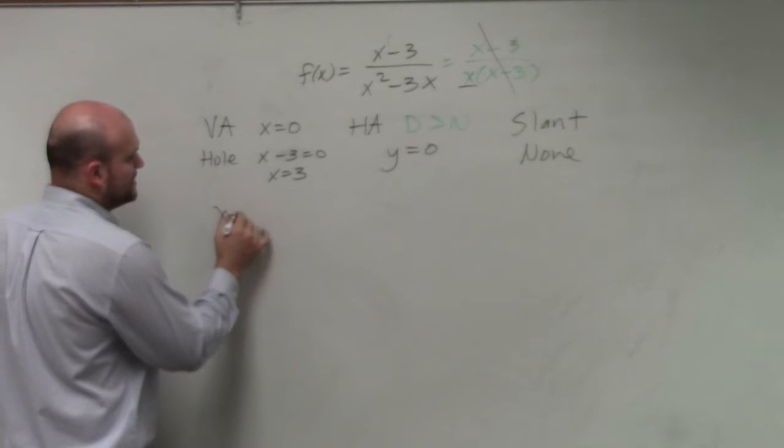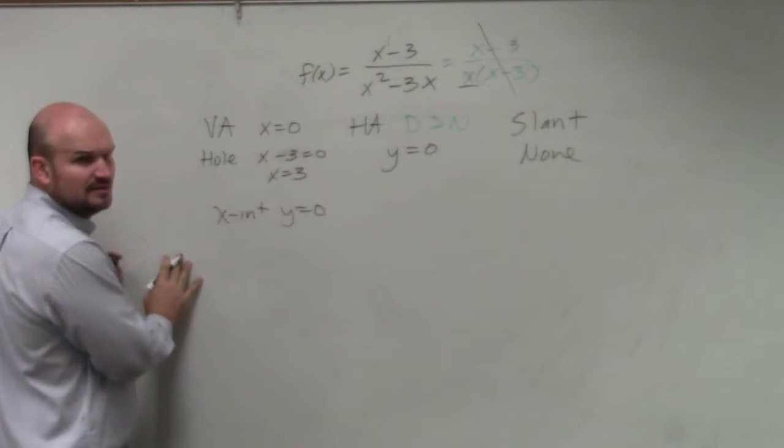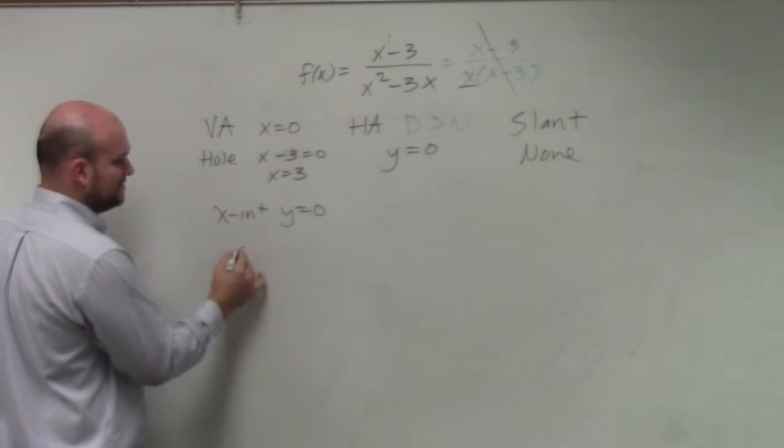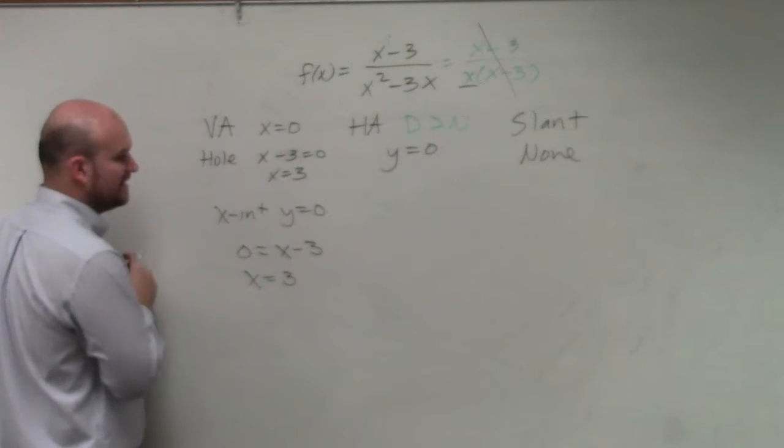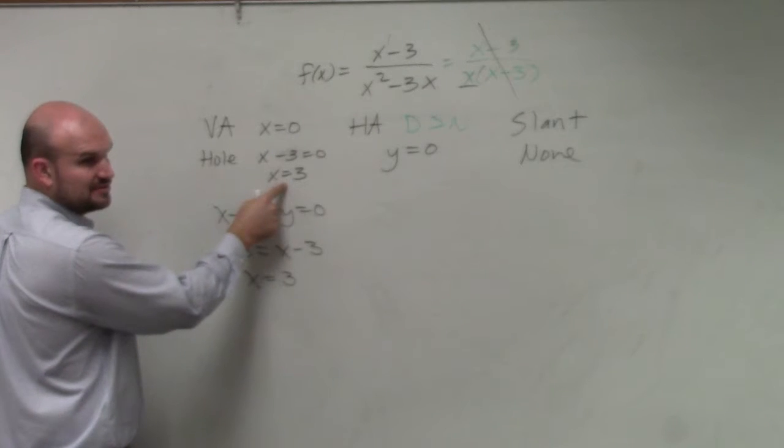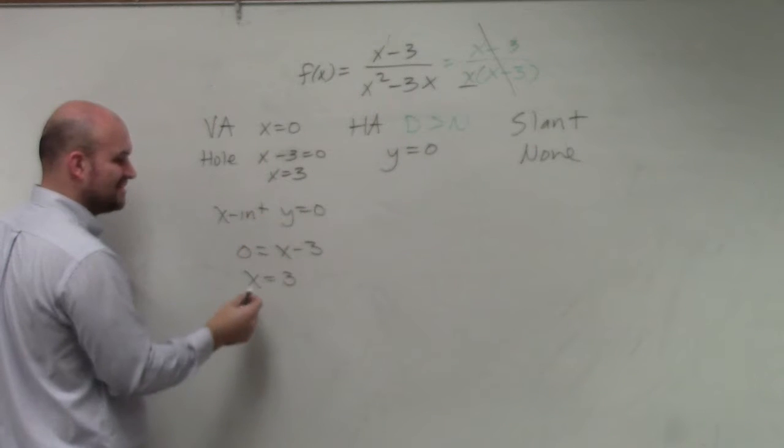X-intercept, y equals 0. Do you guys remember my little trick that I said? For when y equals 0, you're basically setting the numerator equal to 0. So therefore, x equals 3 is my x-intercept. However, what do we have at x equals 3? What is it? Hole.